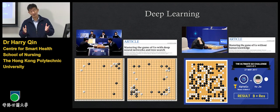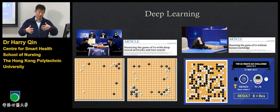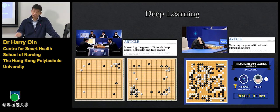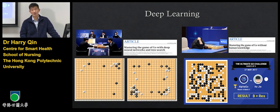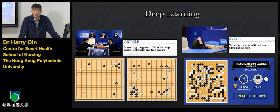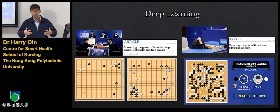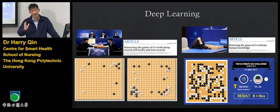AlphaGo made these moves and won the game. After the match, the top human players carefully studied these moves, and they found that these moves really have some advantages compared with traditional moves. That means deep learning techniques can not only learn knowledge from humans, but also can create new knowledge — such as these moves — based on human knowledge. This characteristic is very amazing. So we really want to take advantage of this characteristic of deep learning to improve medicine and healthcare application performance.